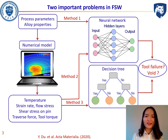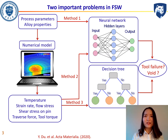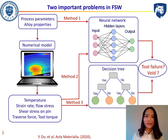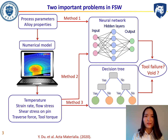Here we show how to combine experimental results, mechanistic models, and machine learning to avoid tool failure and void in friction stir welding. Here is our roadmap. We start with process parameters and alloy properties, which are available in the literature and easy to collect. The first approach is using these process parameters and material properties to fit a neural network directly to predict tool failure and void.